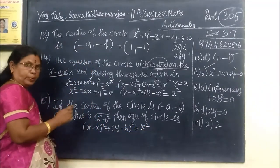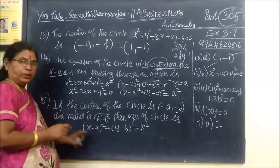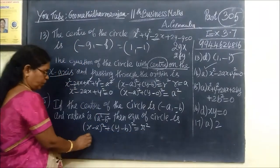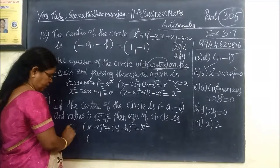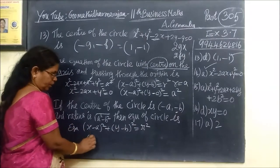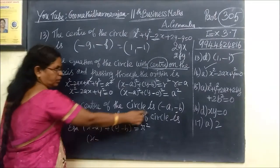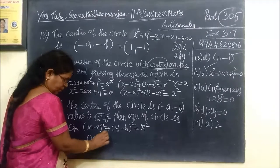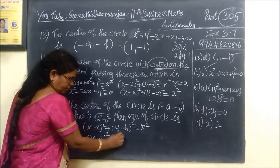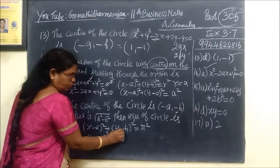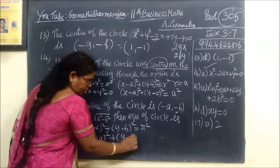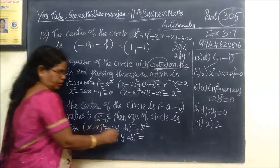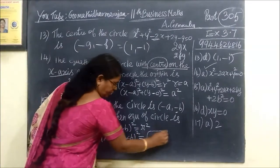This is the formula. The center of the circle is given, so we substitute into x minus a whole square plus y minus b whole square equal to r square, expanding accordingly.